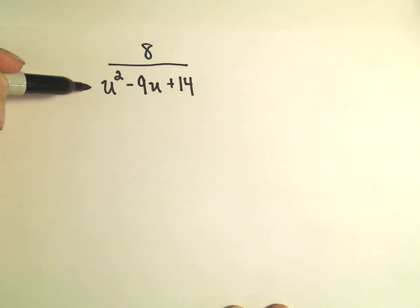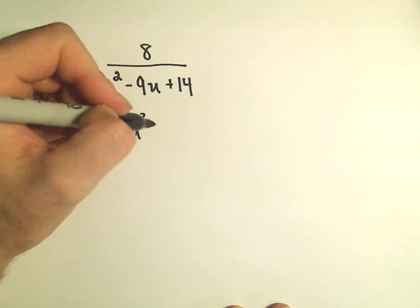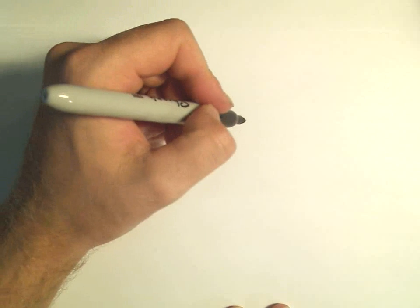Again, it's bad if we have zero in the denominator. So really what I'm going to do is figure out what makes the denominator equal to zero, and those are the values that we'll have to exclude.